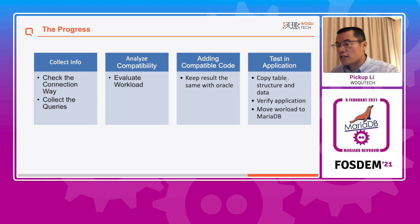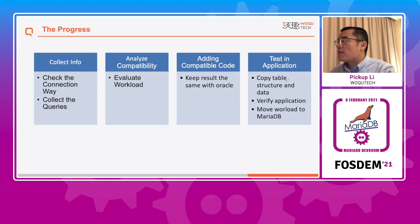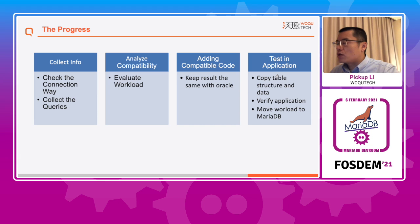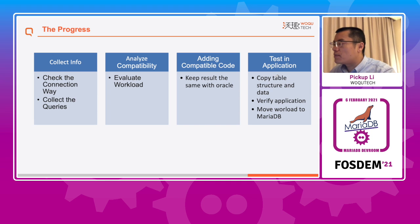The fourth stage: verify and migrate the business. The main focus is on the results returned by the database layer from the previous stage. This stage requires verification and testing at the application layer. The DBA should provide a professional migration plan to ensure smooth application migration to MariaDB.